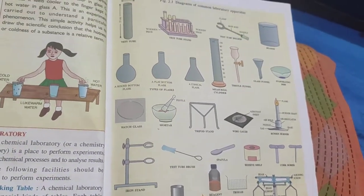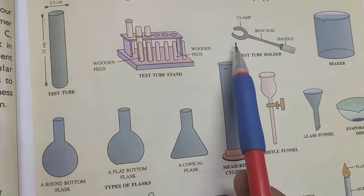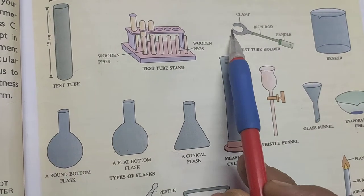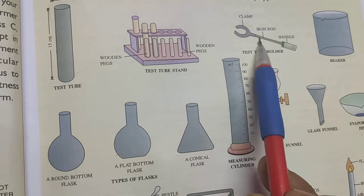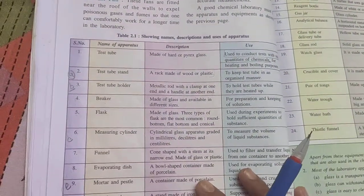Okay, so where is the test tube holder? This is the test tube holder. It is the clamp which is used for holding the test tube and it is its handle, it is the iron rod.